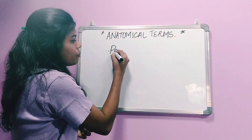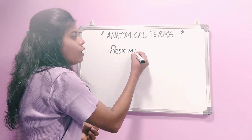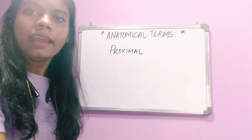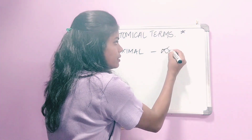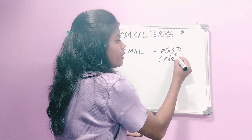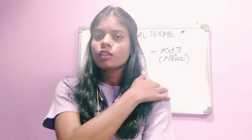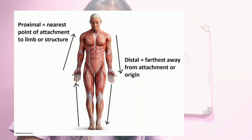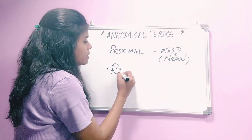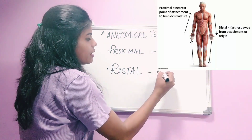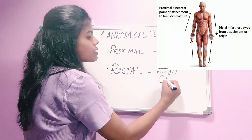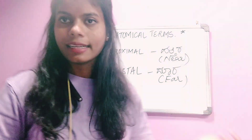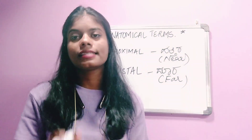Next is proximal — P-R-O-X-I-M-A-L. Proximal means near. It is usually used for limbs in relation to the navel or body origin. For example, the elbow is proximal to the wrist — meaning the elbow is nearer to the body. The opposite is distal — D-I-S-T-A-L — which means far. So proximal means near and distal means far.